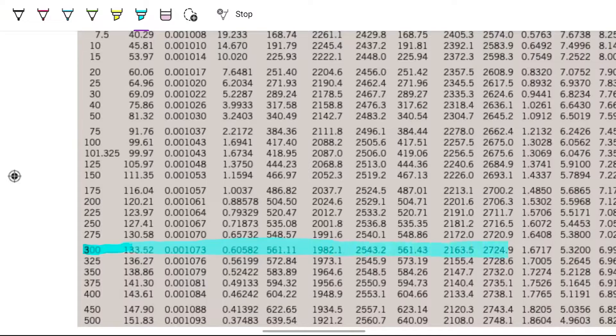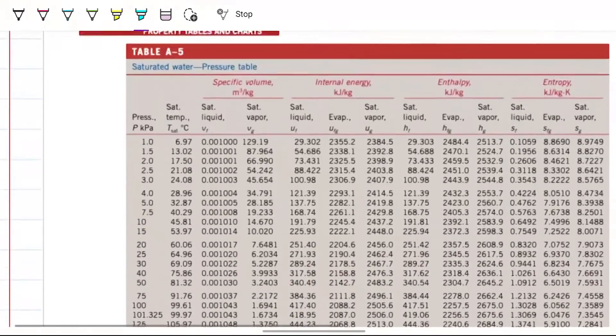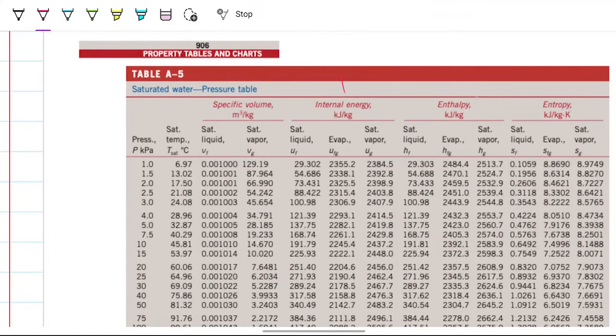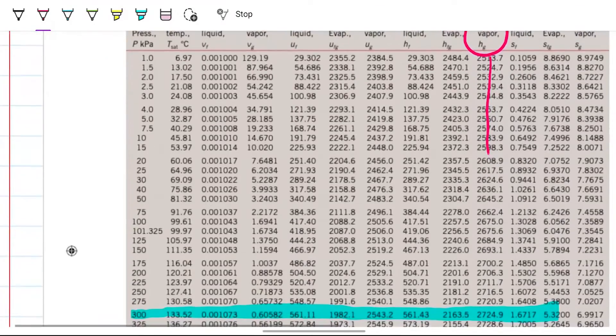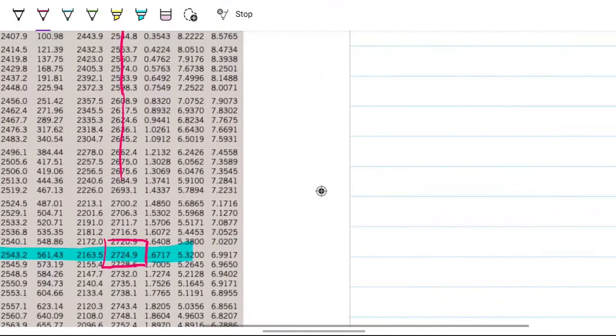And out of this row, I'm interested in the saturated vapor enthalpy. I'm going to look down this one here, and this is the value that I'm interested in: 2724.9 kilojoules per kilogram. And with those two numbers, I can just subtract the two of them. So 3642.4 minus 2724.9, that's going to give me my w1.